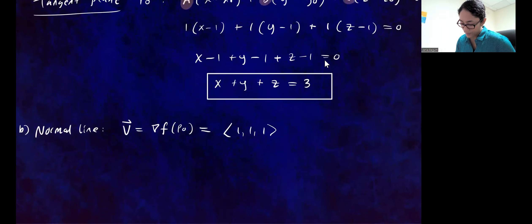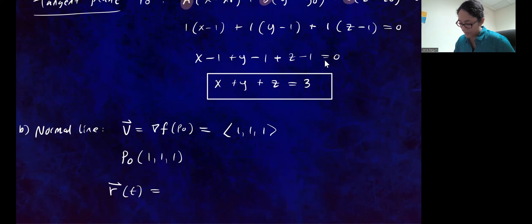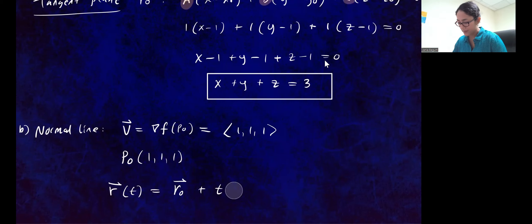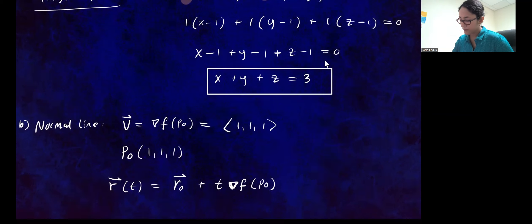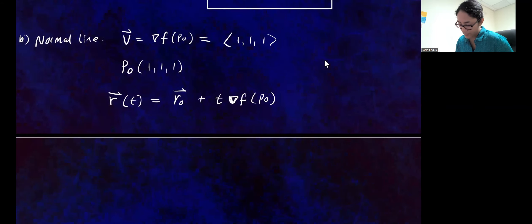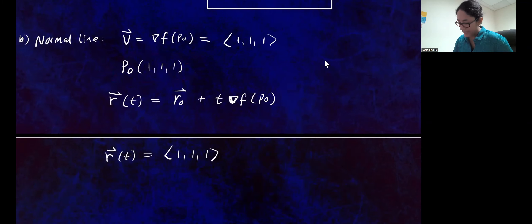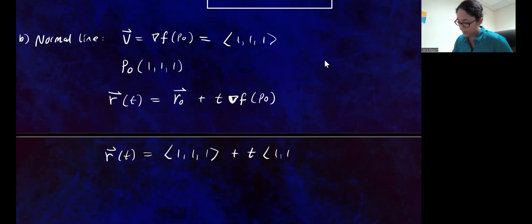We know the point — we want the normal line to pass through P-O with coordinates (1, 1, 1). So the vector equation of this line is R(t) = R₀ + t·V. Since we're making this line parallel to the gradient vector, we'll use the gradient vector as our direction vector at P-O. Substituting these components, R(t) = (1, 1, 1) + t·(1, 1, 1).